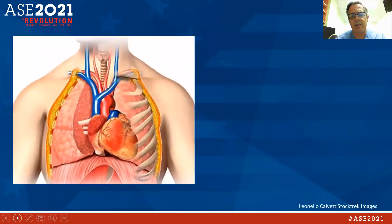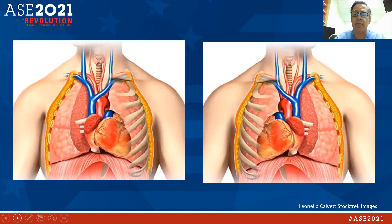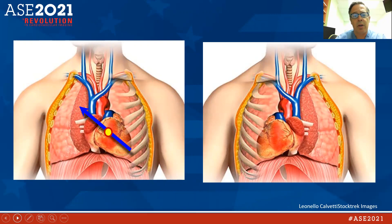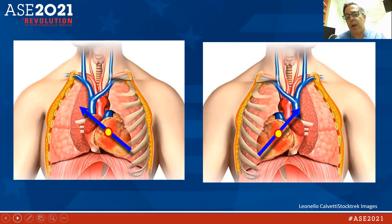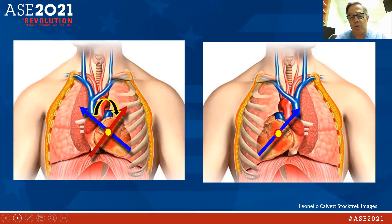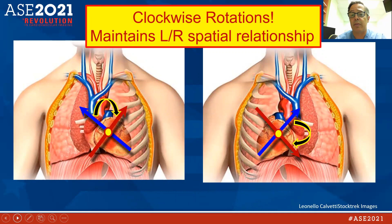The difference between scanning a patient with levocardia versus dextrocardia is the placement of the parasternal view. For dextrocardia, the marker would be oriented toward the base of the heart, toward the left shoulder — opposite of what we'd normally see — and probe placement is on the right parasternal. Clockwise rotation for the parasternal short axis view is very important because this helps us maintain left-right spatial relationship.